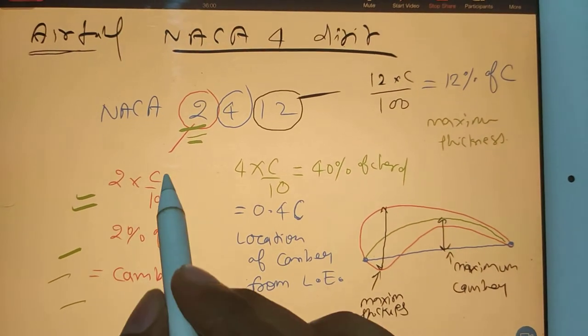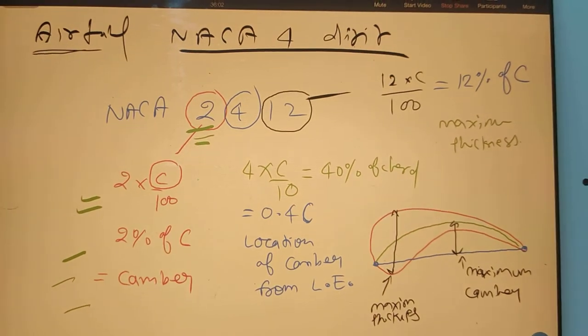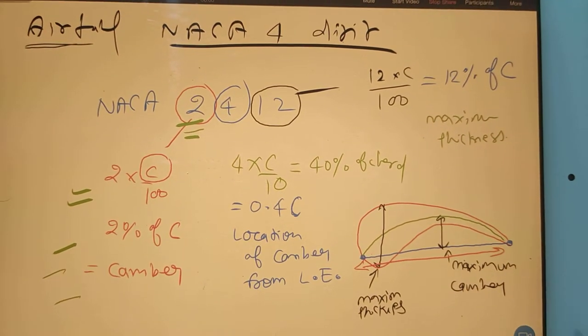C represents the length of the chord, the entire blue line, this part.